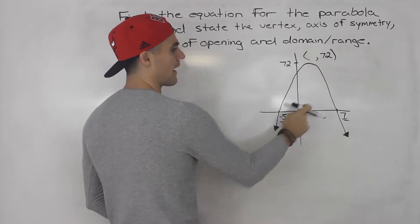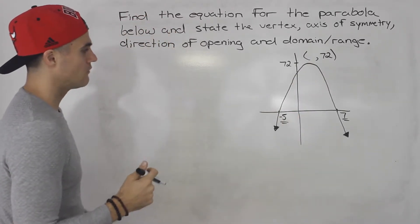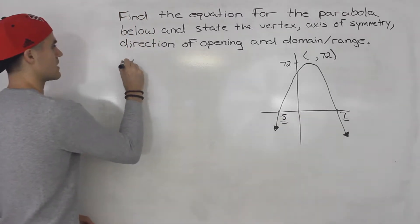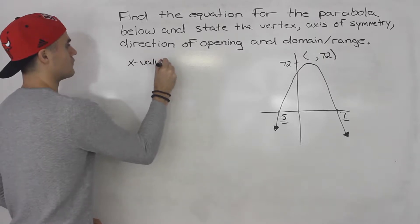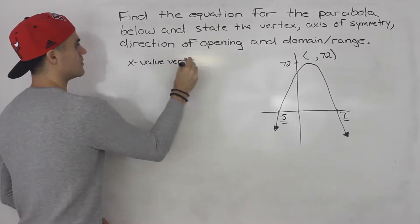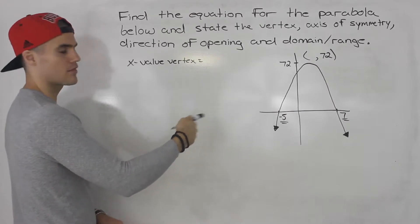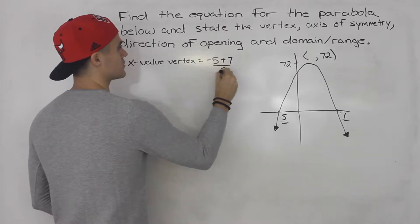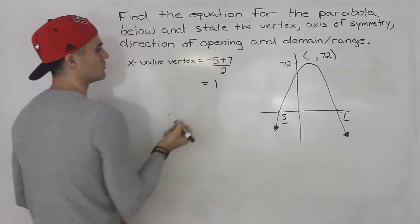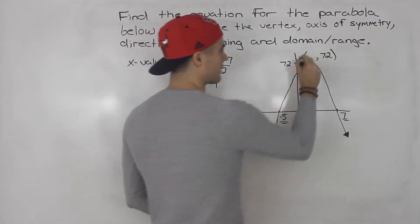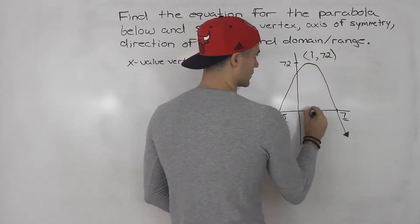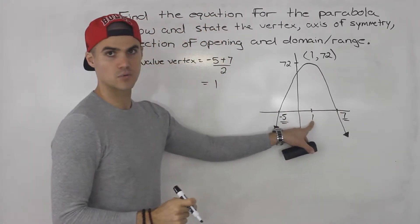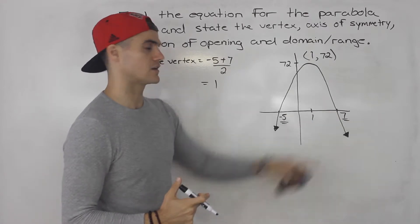Notice we don't really know where the x-value of the vertex is. However, because we're given the intercepts, we can find the x-value of the vertex by just adding the intercepts and dividing by 2. So negative 5 plus 7 divided by 2 gives you 2 over 2, which gives you 1. So the x-value of the vertex is 1 — right in the middle of the intercepts. The distance from negative 5 to 1 is 6, and the distance from 1 to 7 is 6.